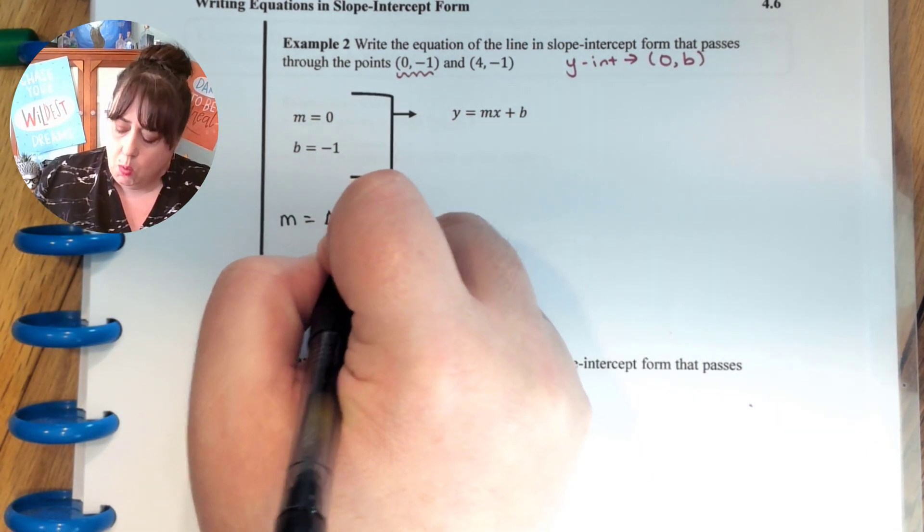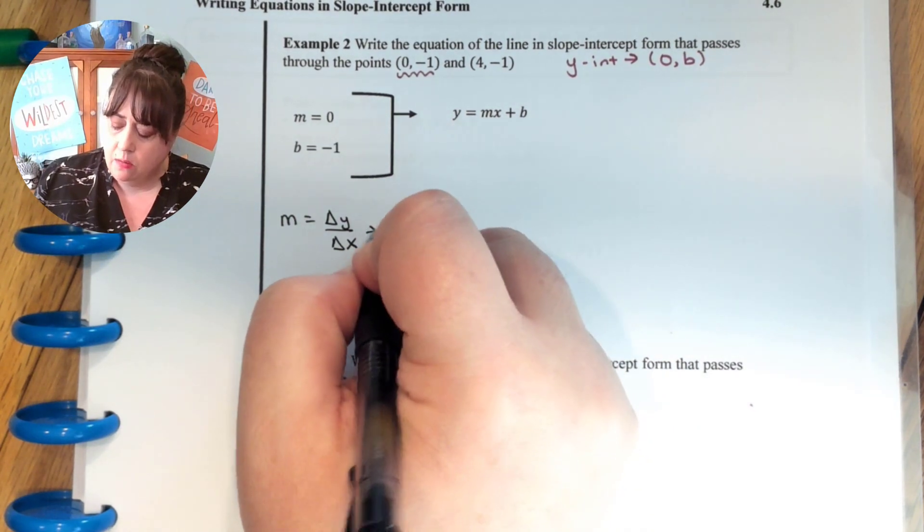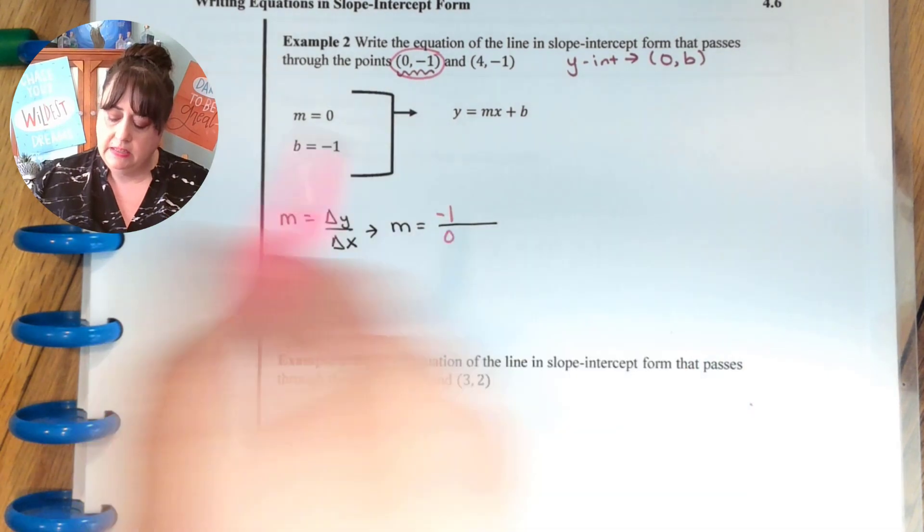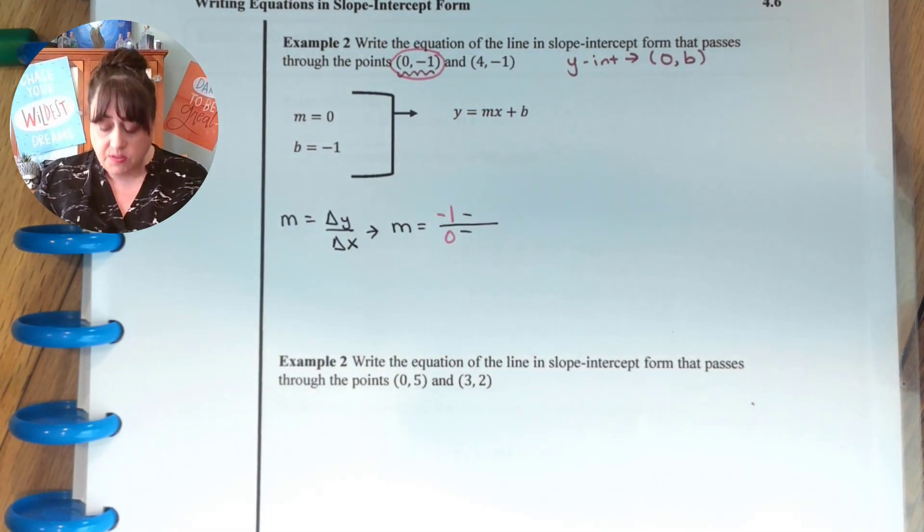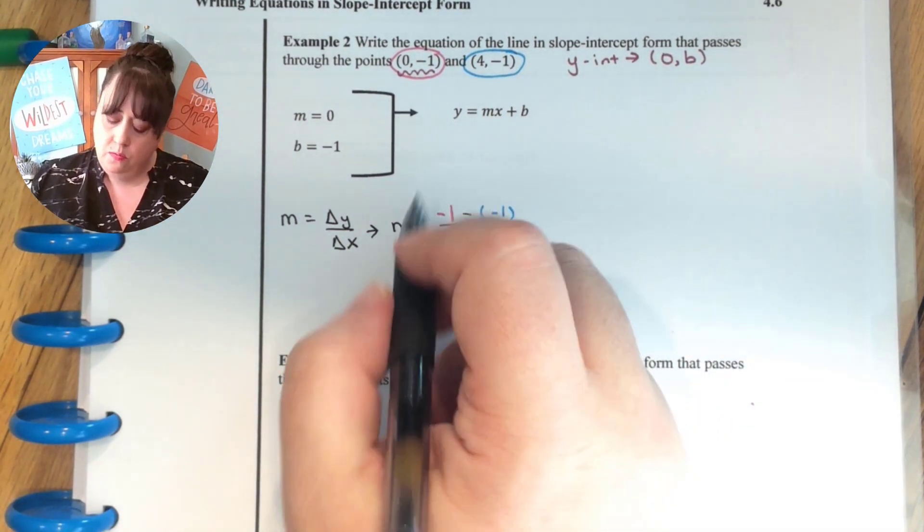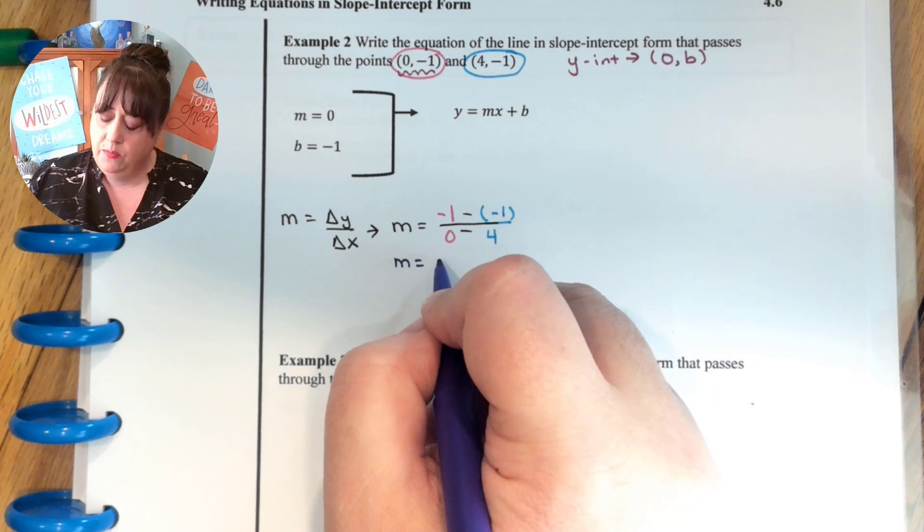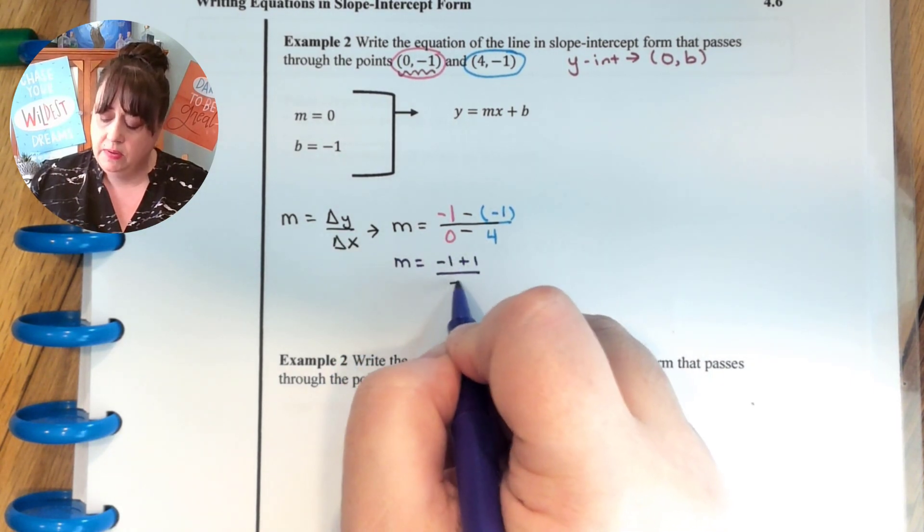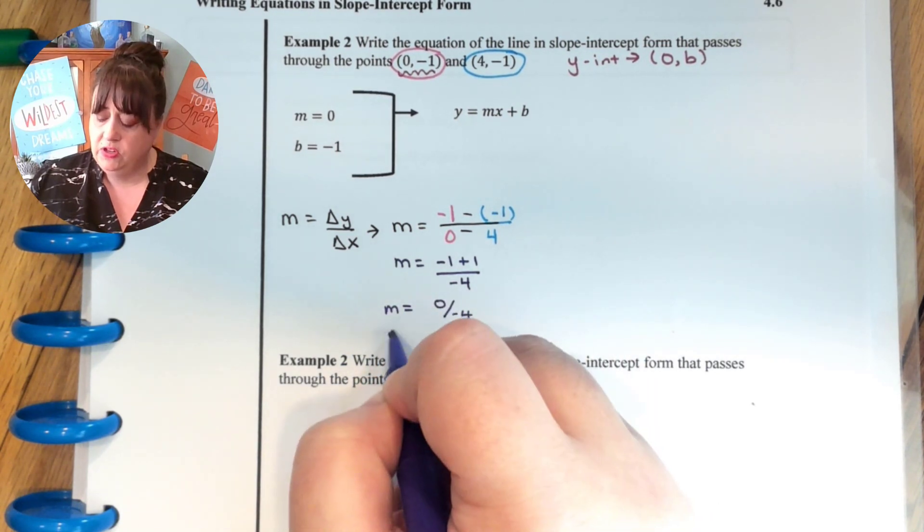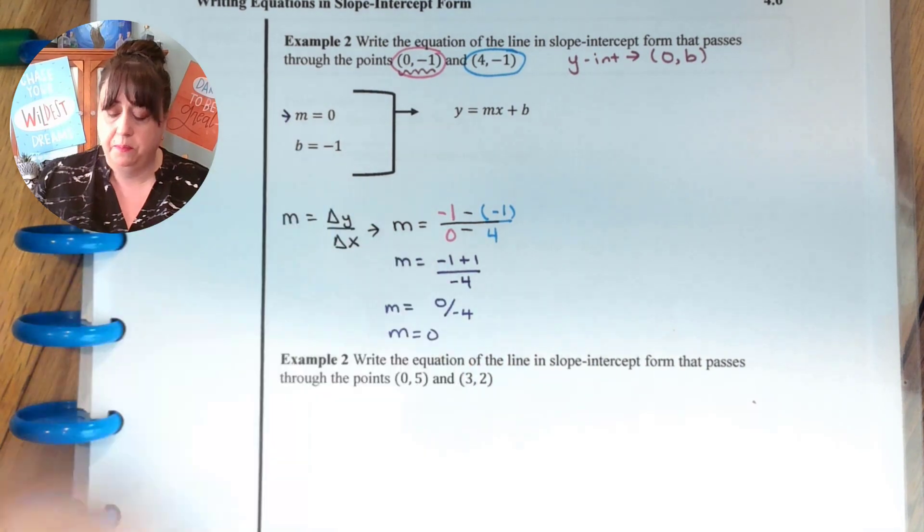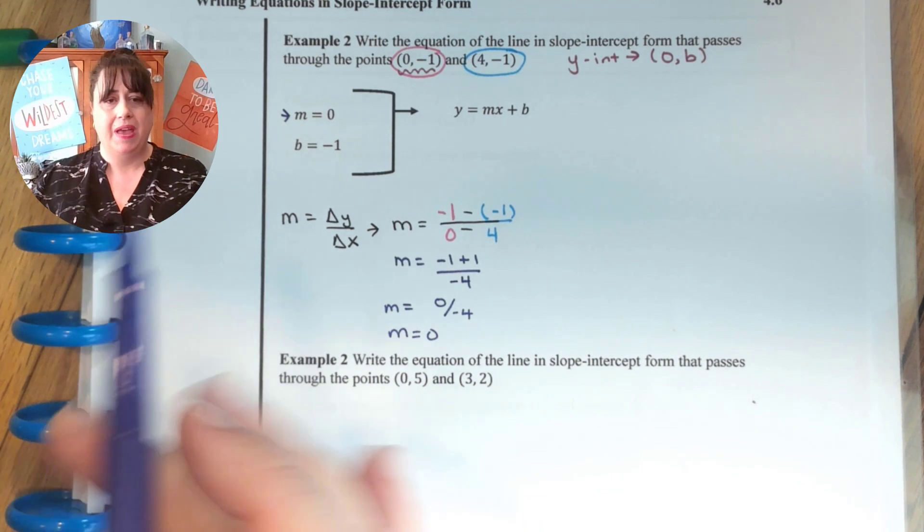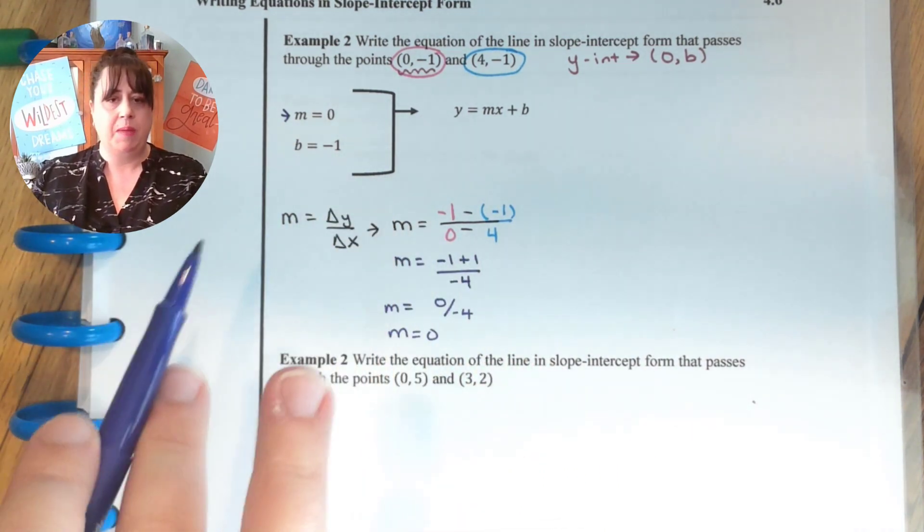We know that to find the slope, it is delta y over delta x. And so I take my two points. Take that one first. And I go y's over x's. And then I subtract. And then I take my next point. And I go y's over x's. And so negative 1 minus negative 1 is really negative 1 plus 1. 0 minus 4 is really negative 4. So this is really 0 divided by negative 4, which is 0. So when you're given two points, you are going to have to go find your slope. But once you have that, it goes right back to what we did before.